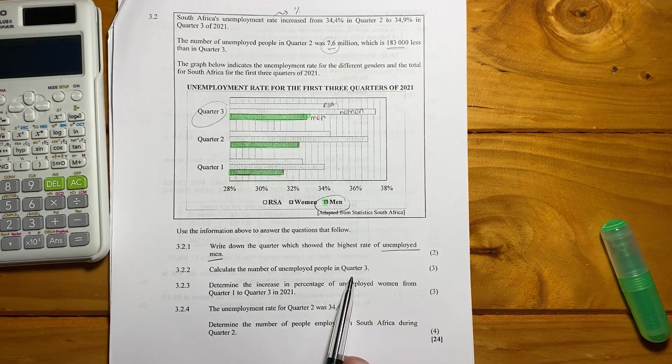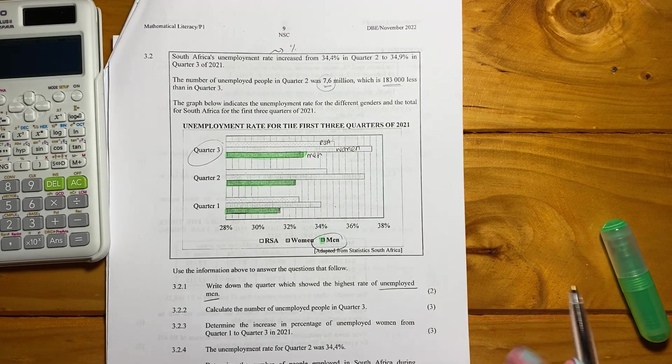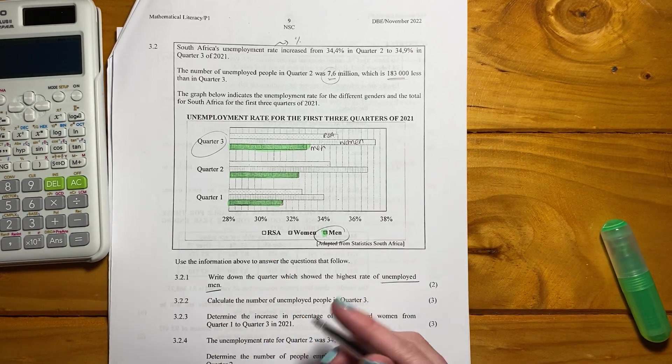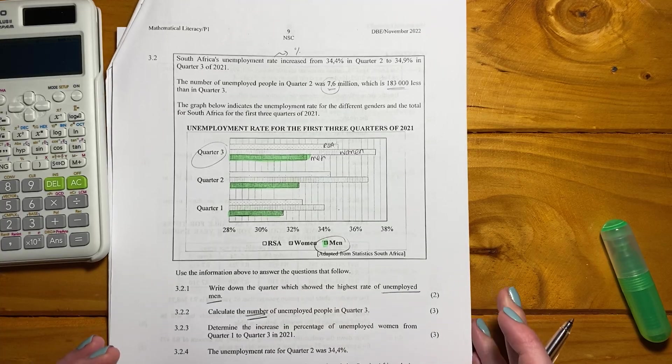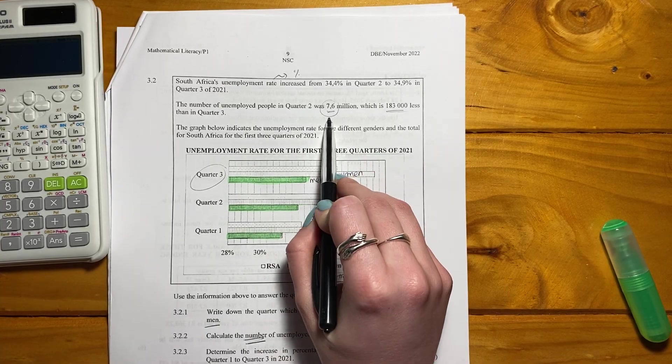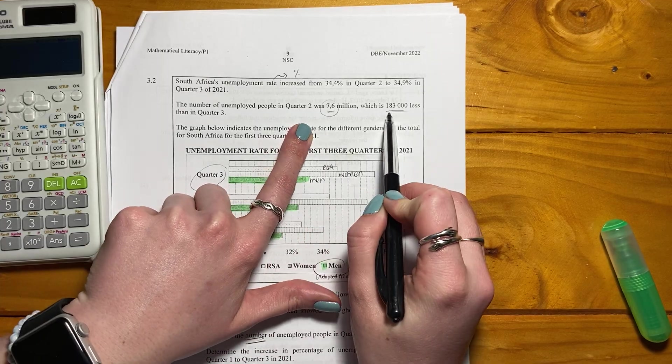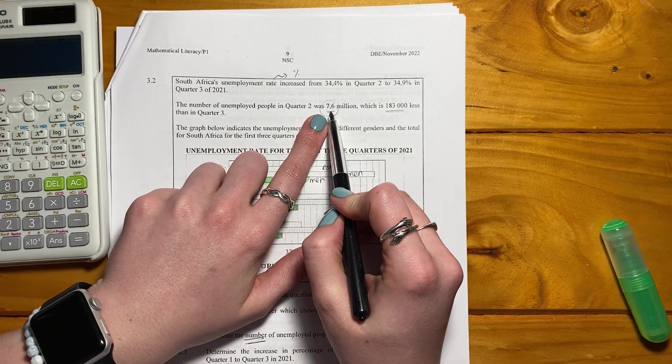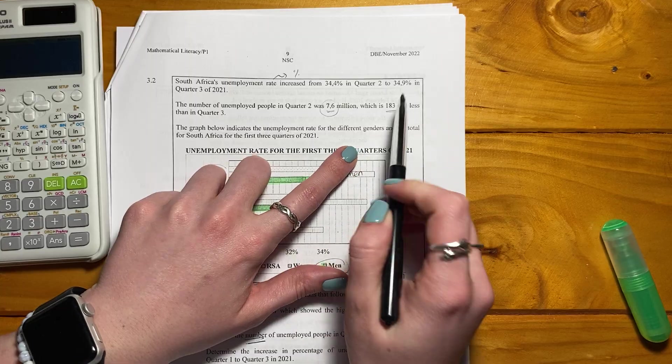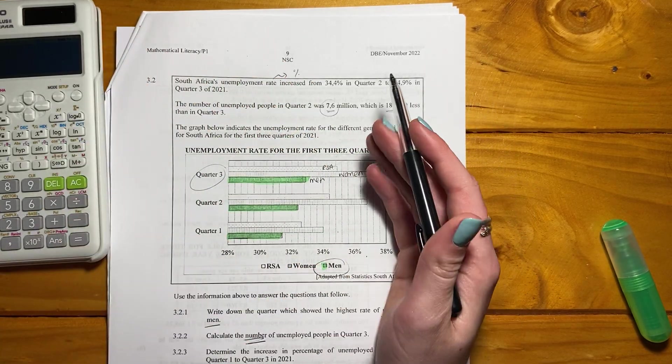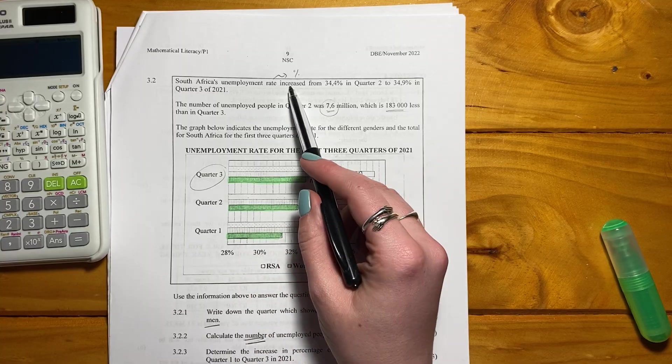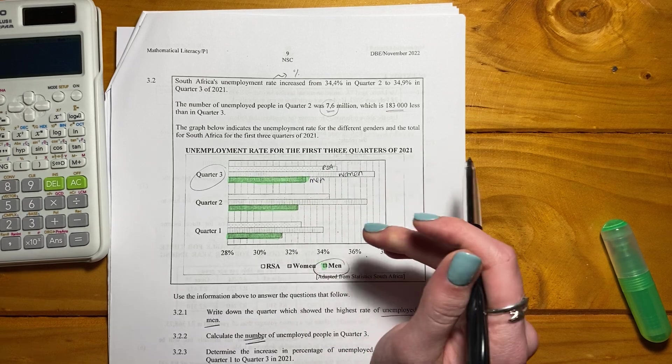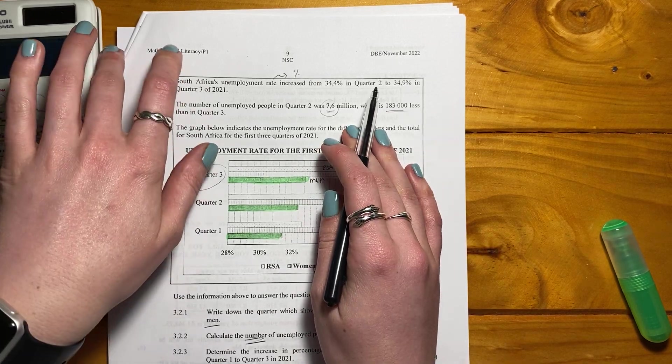It says calculate the number of unemployed people in quarter three. Now what students are tempted to do is look here and read off the percentage. They didn't ask for the percentage, they asked for the number. But we know it's not too difficult because they told us in quarter two it's 7.6 million, which is that amount less than in quarter three. So be careful in these questions not to just look at the graph. Also look at the little paragraph or the preamble of the information that's presented, because there's key information in the sentences as well.